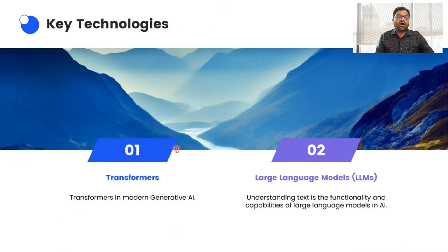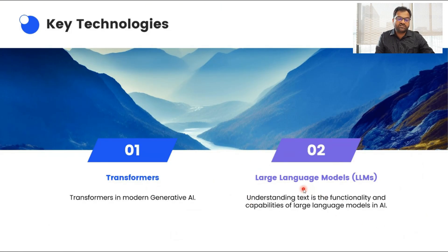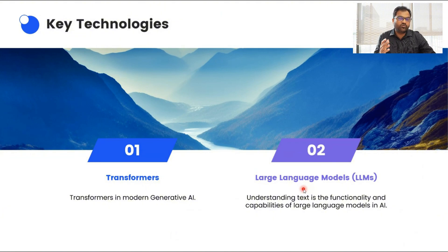All generative AI models work based on transformer architectures — in further sessions we are going to discuss what a transformer architecture is. The first released models were large language models, which work only on text data. But now the latest models are multi-modal models, which work on text, image, audio, and video.